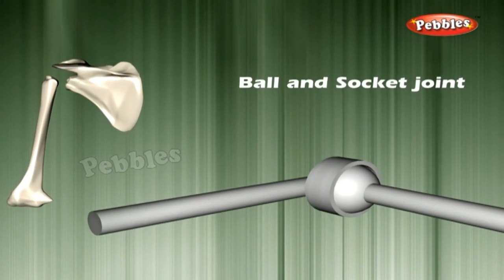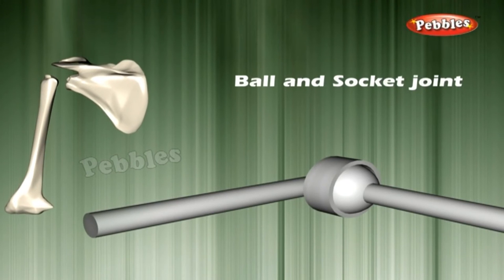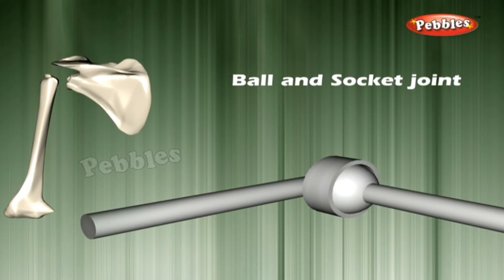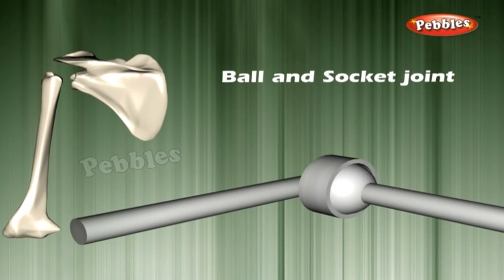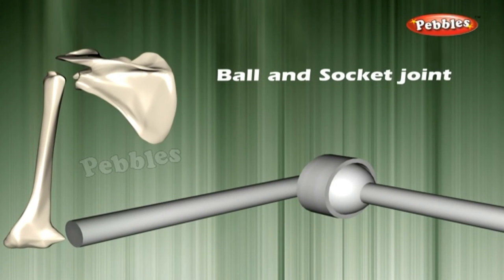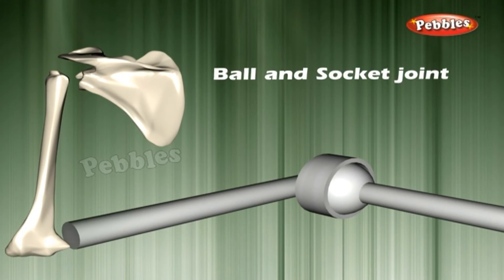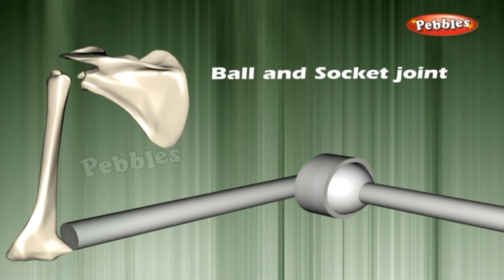Ball and Socket Joint. The shoulder and hip joints allow movement in all directions. In such joints, the end of one of the bones is round like a ball and fits into a hollow part or socket in the other bone. The bone that ends in a ball — for example, the femur or the humerus — can move in any direction. Such a joint is called a ball and socket joint.